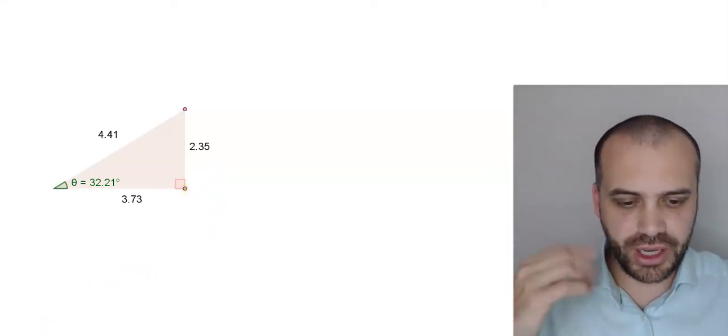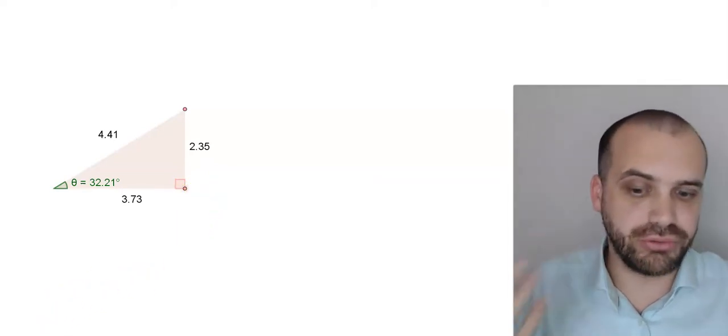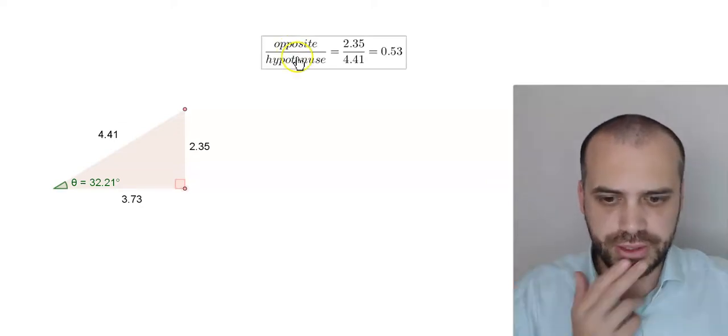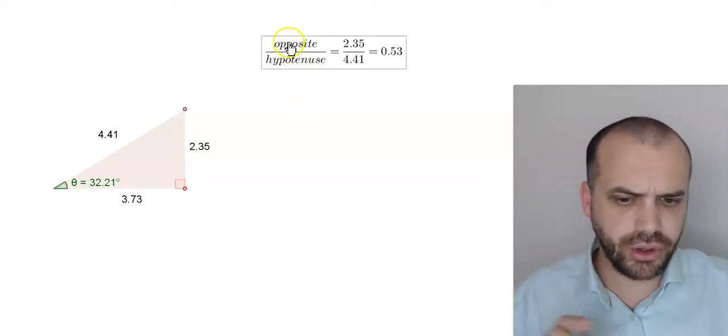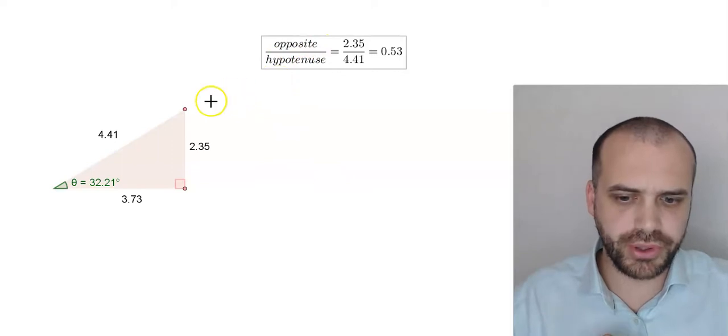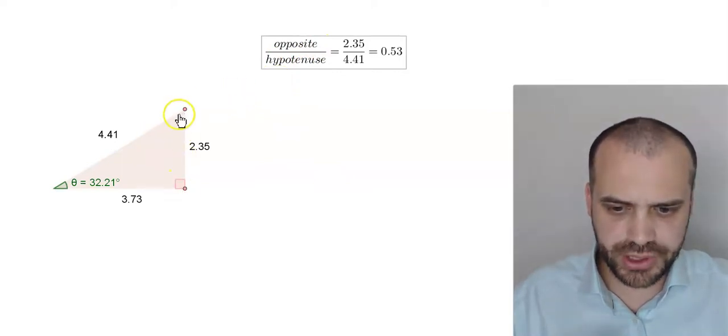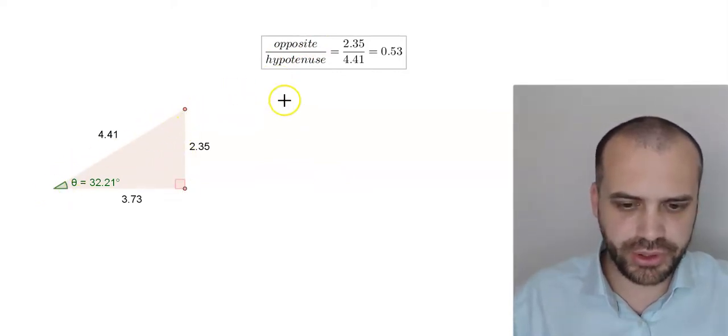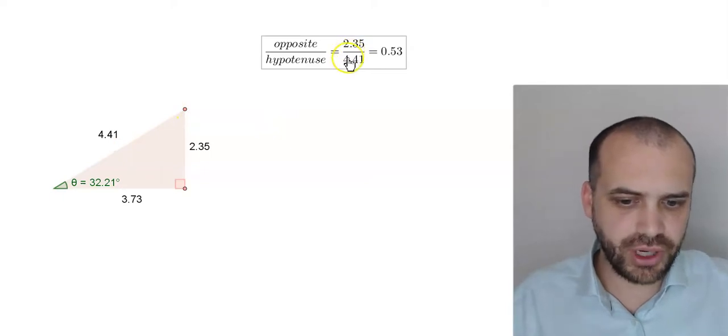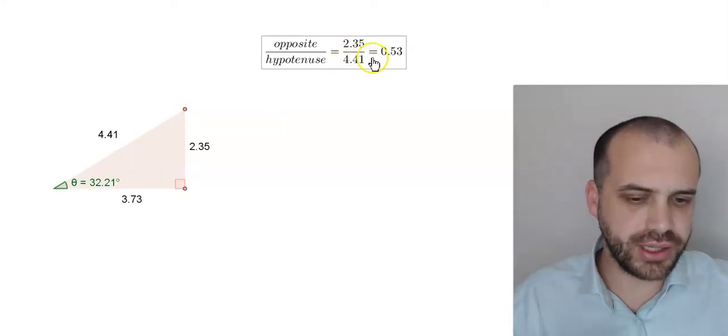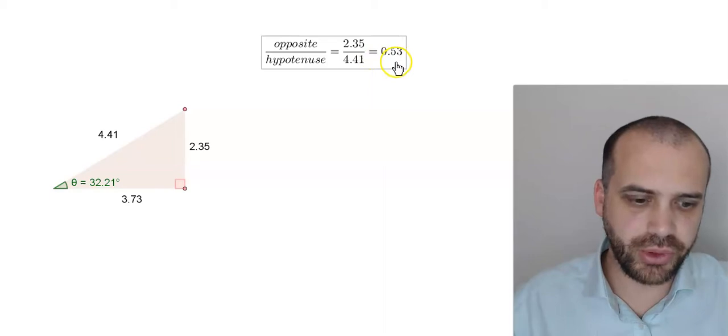Now we're going to focus on our first trigonometric ratio here. Let's take a look. So I have this neat little formula here, opposite divided by hypotenuse. So this is the opposite side and this is the hypotenuse, and 2.35 divided by 4.41 is equal to 0.53.